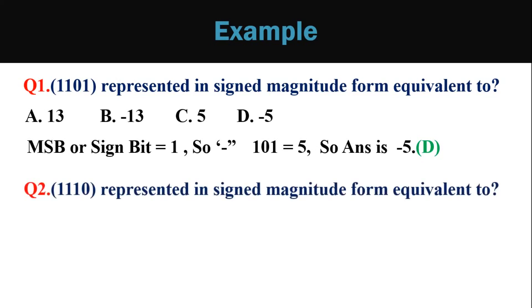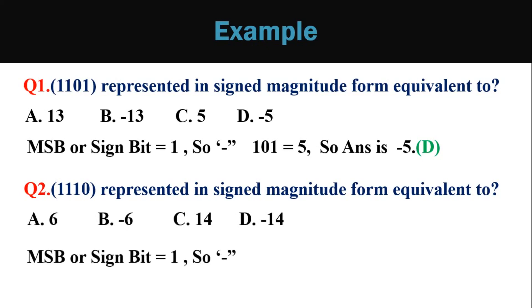Another question: 1110 represented in sign magnitude form is equivalent to 6, minus 6, 14, or minus 14? Using the same process, the MSB or sign bit equals 1, so the number is negative. The remaining 3 bits 110 equal 6 in decimal. So the answer is minus 6, option D.